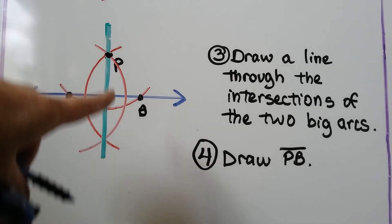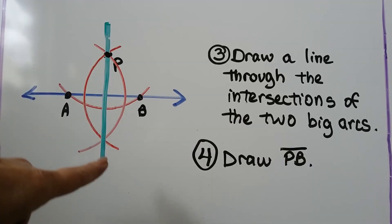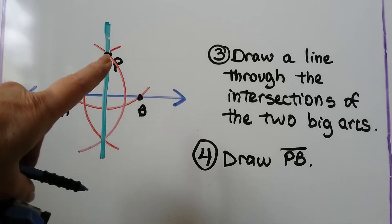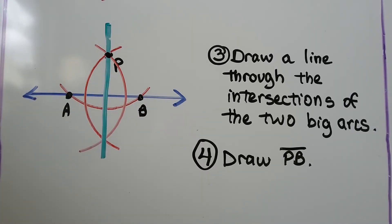We took the straightedge and drew a line through the two intersections of the large arcs, then connected point P to point B.